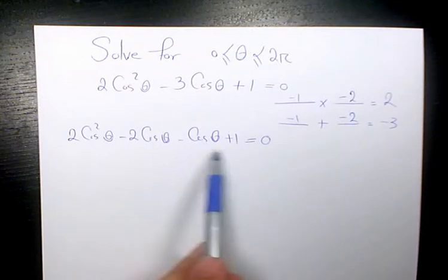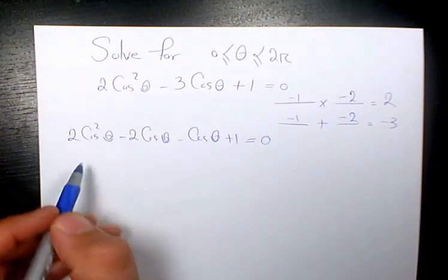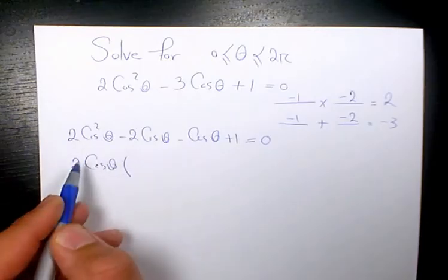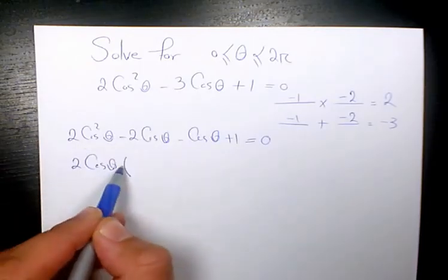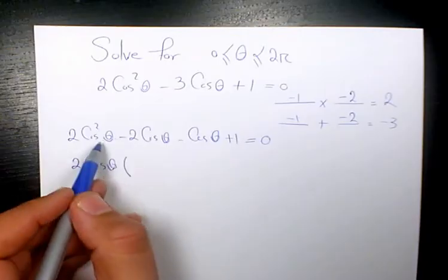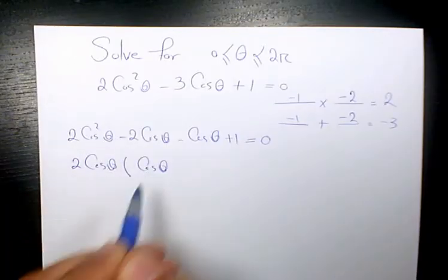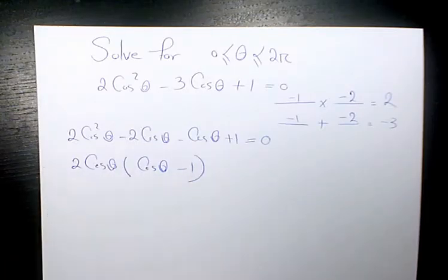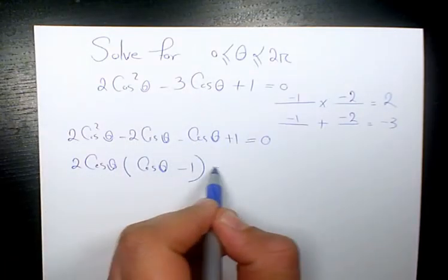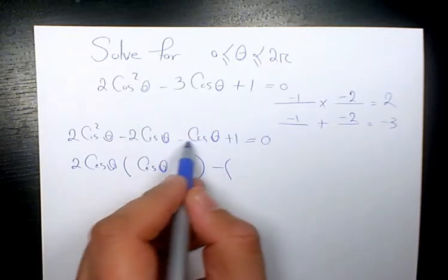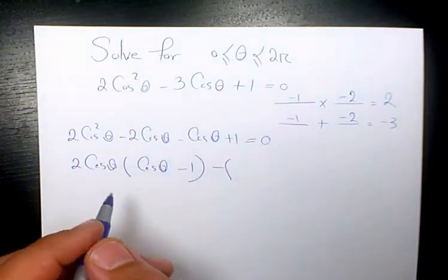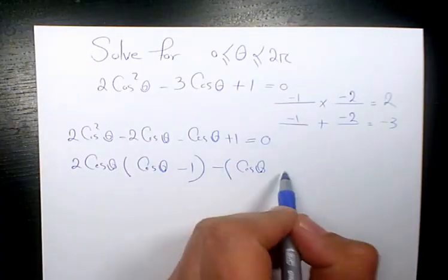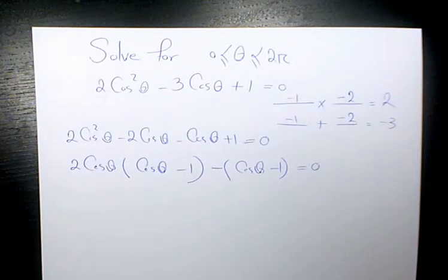Then I factor by grouping. The first group has a GCF of 2 cosine theta. Cosine squared theta divided by 2 cosine theta is cosine theta, and negative 2 cosine theta divided by 2 cosine theta is negative 1. For the second group, I factor out negative 1. Negative cosine theta divided by negative 1 is positive cosine theta, and positive 1 divided by negative 1 is negative 1.